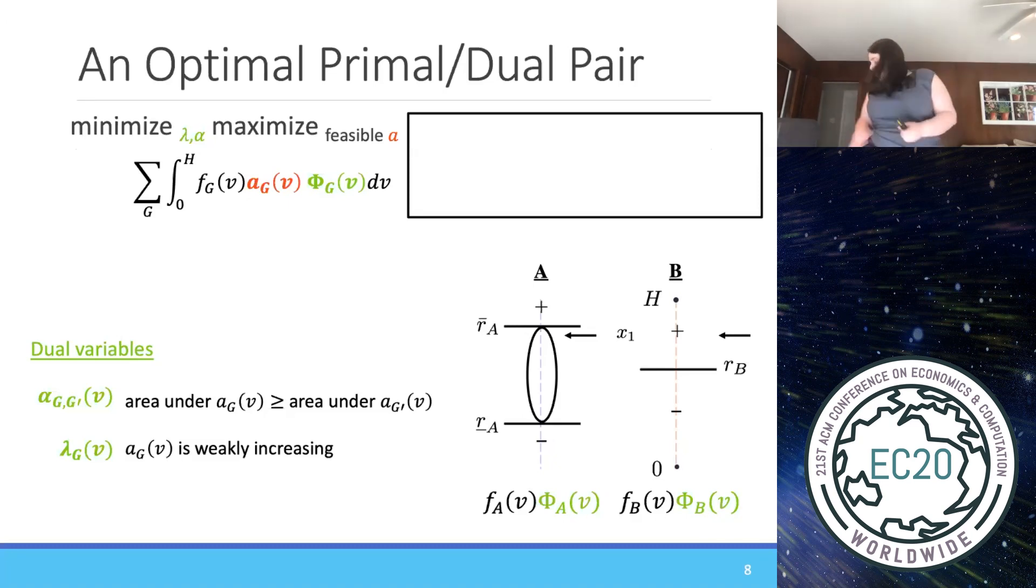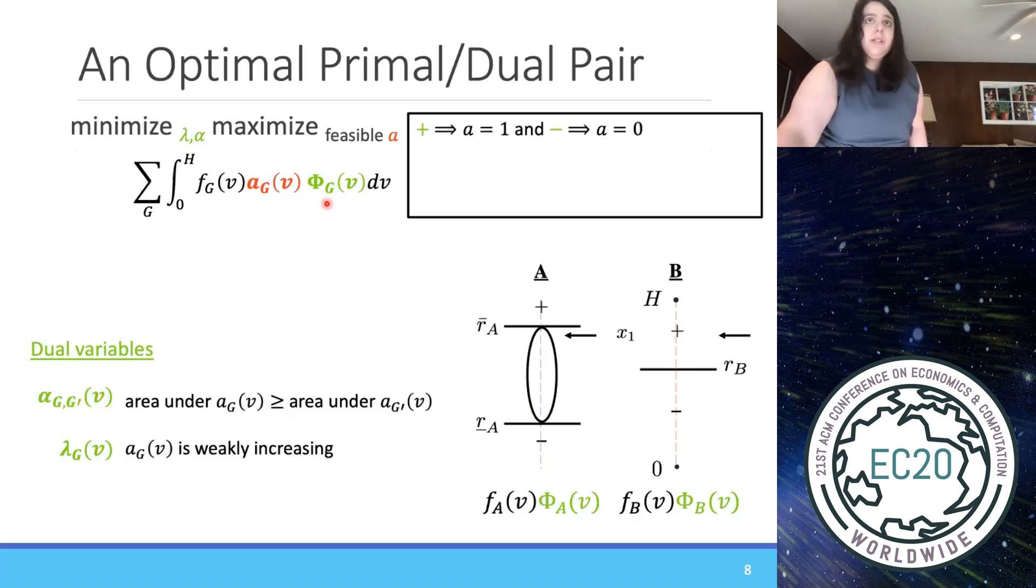And now I want to talk about some complementary slackness conditions and how we represent them pictorially, because what's going to constrain us is the complementary slackness conditions that say that this has to be optimal. And that's what's going to force our hand with respect to the menu complexity. So first we should notice that we have this phi variable. If this phi variable is positive, then in order for a to maximize this quantity, then a better be 1. A is between 0 and 1. That's how it's constrained to be feasible. So if phi is positive, then a better be 1. If phi is negative, then for a to maximize this quantity, a better be 0. And otherwise, if phi is 0, then a can be whatever it wants to be in between. So that's our first constraint. If phi is positive, a is 1. If phi is negative, a is 0.